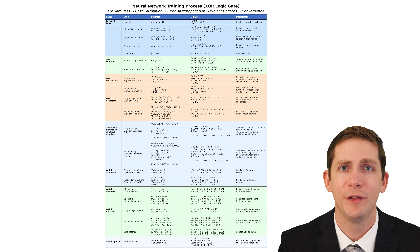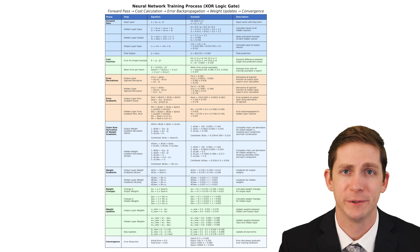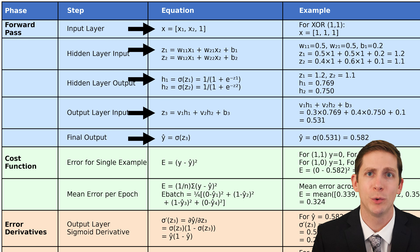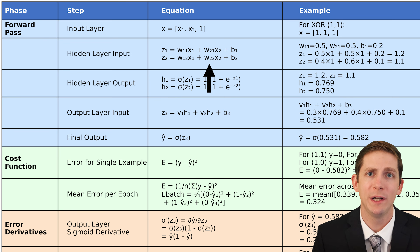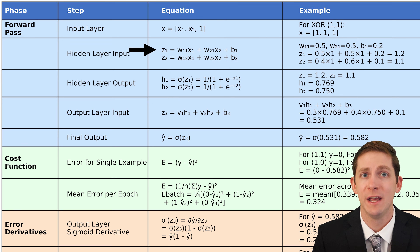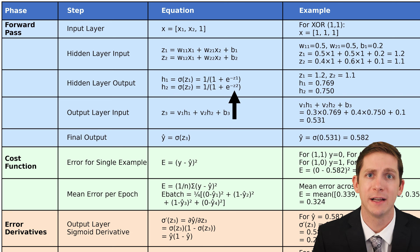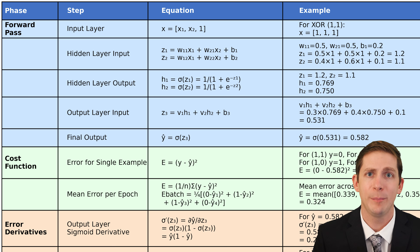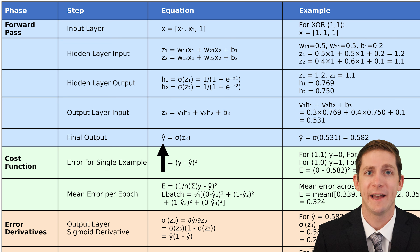The table provides both the equations and a numerical example to help clarify how the equations are used. The top of the table shows the equations for a forward pass, starting with inputs X1 and X2. We compute the weighted sum, also called a linear combination, for Z1 and Z2. These Z values are then passed through the sigmoid function to produce the hidden layer outputs H1 and H2. Similarly, for the output layer, we calculate another weighted sum Z3 and pass it through the sigmoid function to obtain the final output Y-hat.